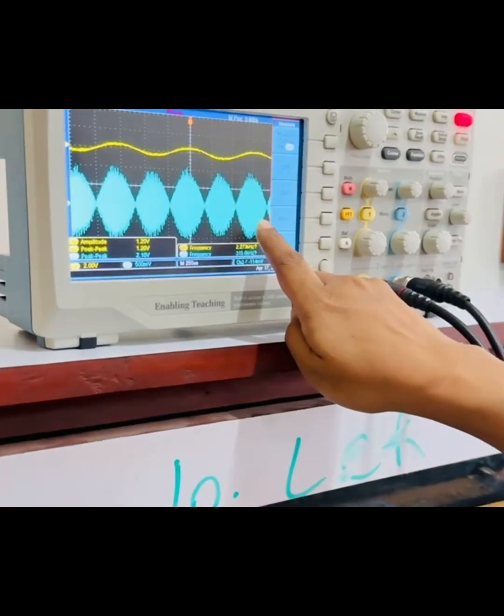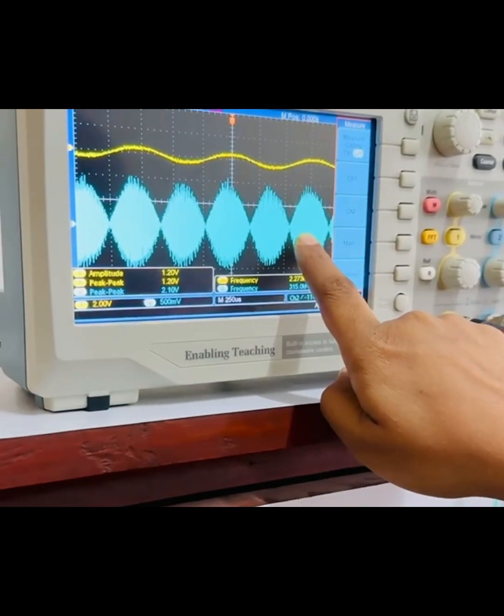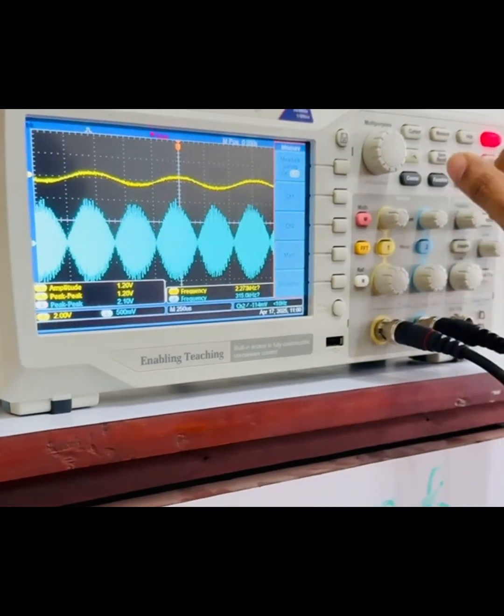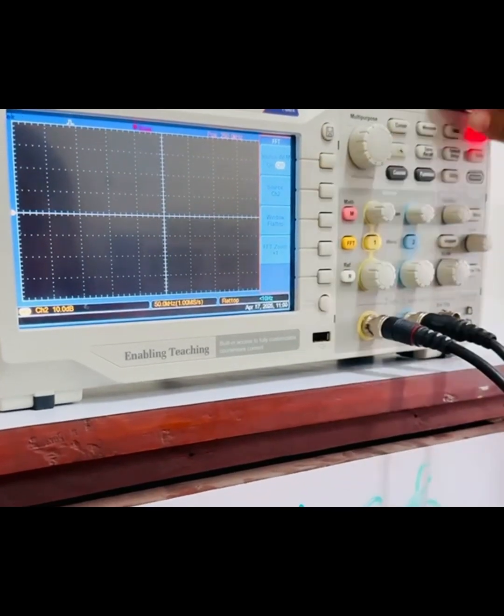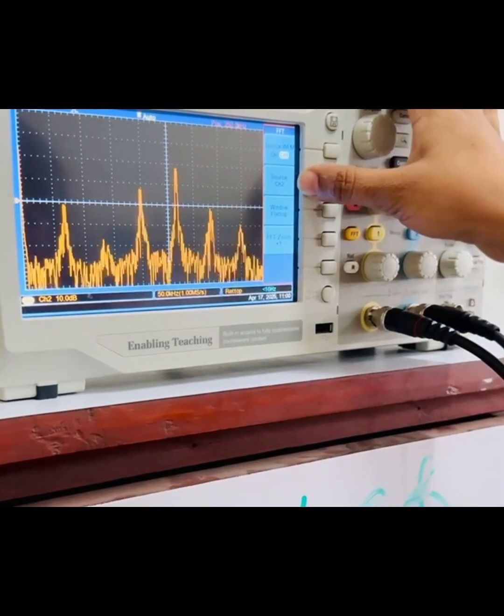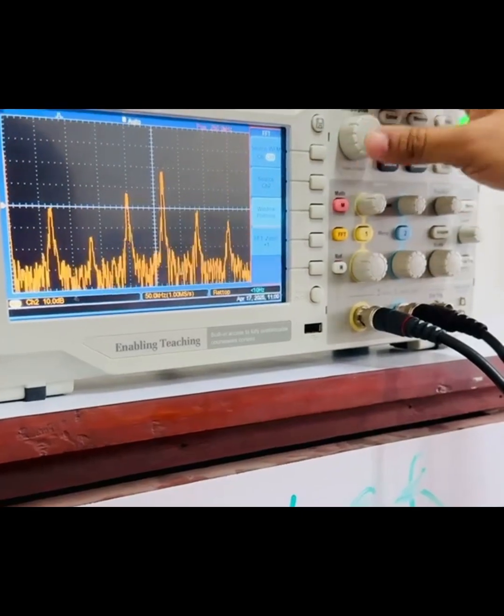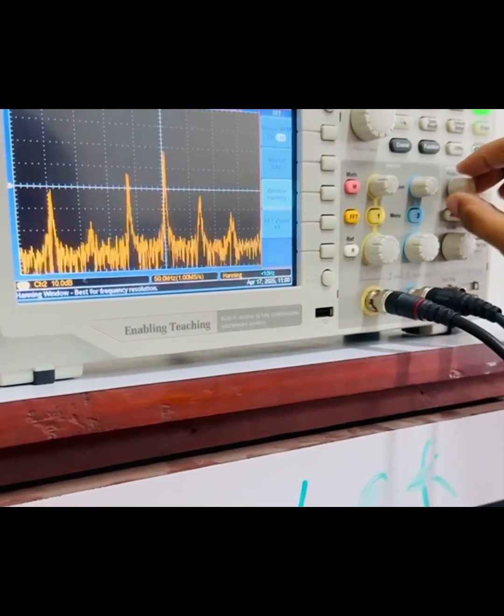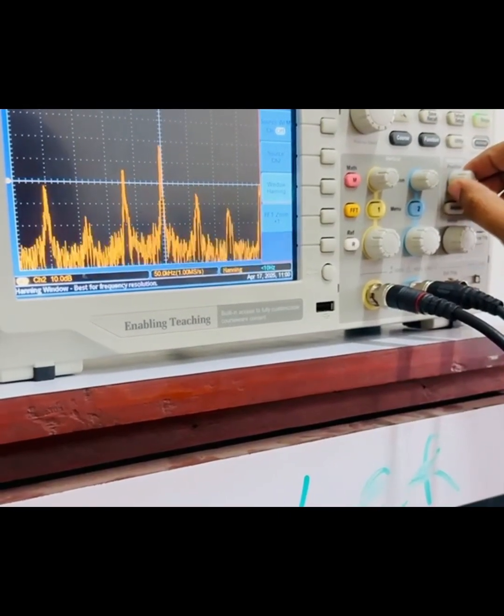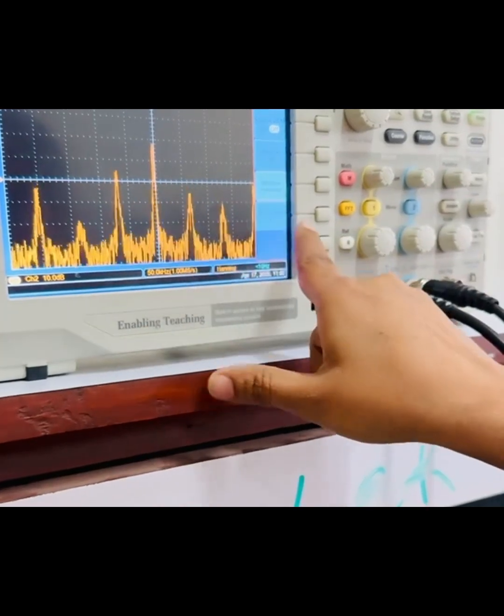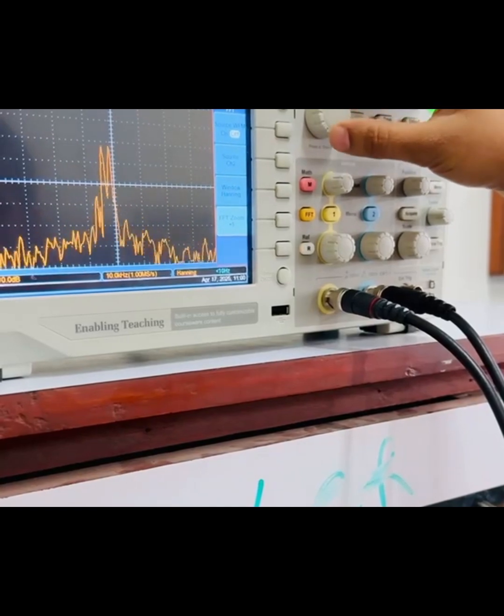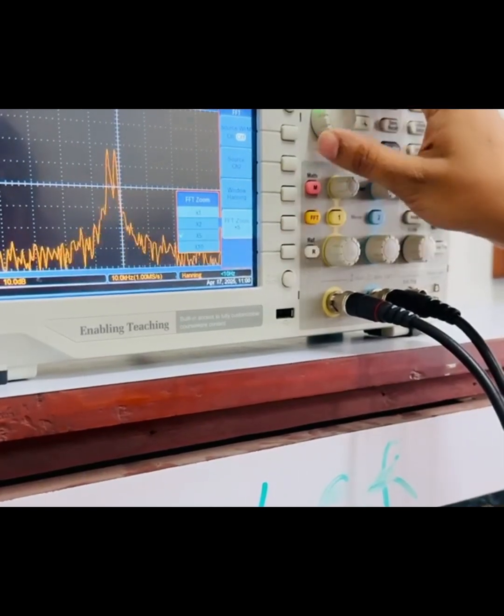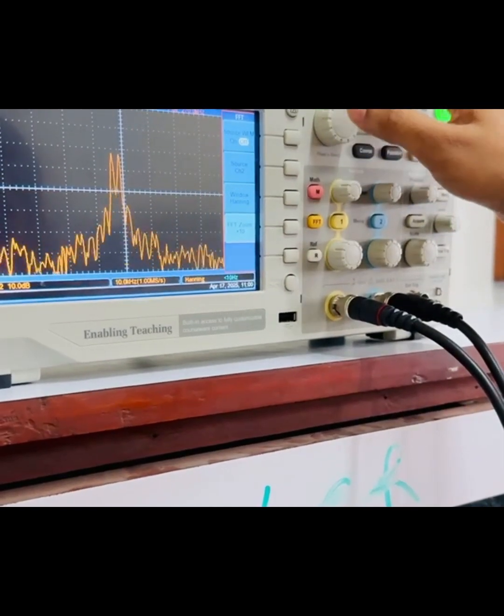The channel 2 shows the DSB output. Now we will follow the procedure of observing the spectrum. Press FFT, source is channel 2, window is Hanning, and adjust the highest peak spectrum at the center of the screen and then zoom the spectrum to observe the sidebands.